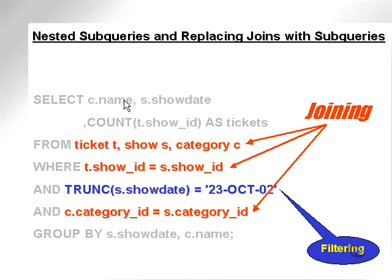The columns we're selecting come from the category table, the show table, and the ticket table. Here's the join for the three tables, and here are the join statements.